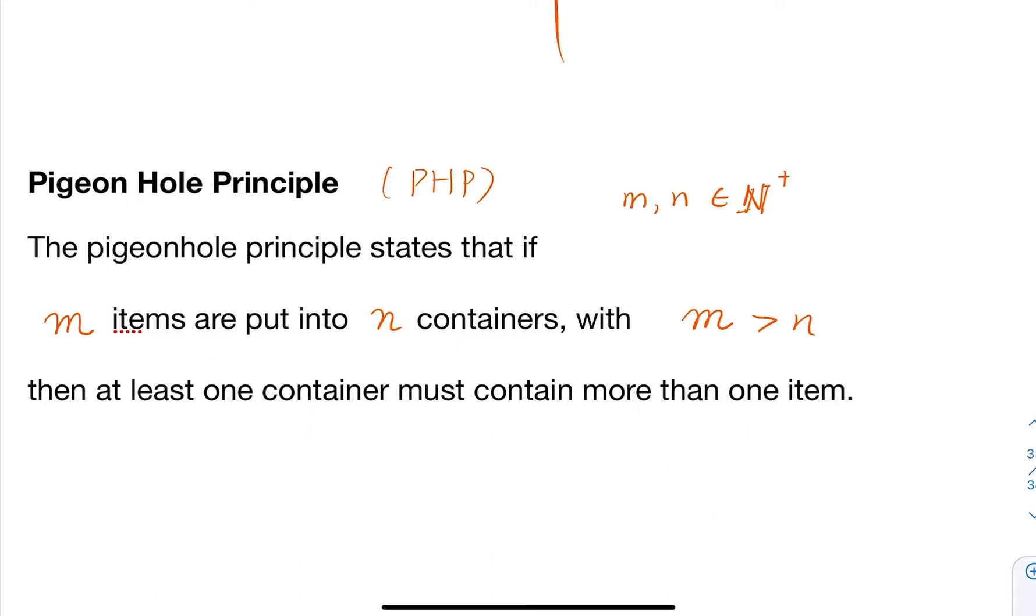There's another form: if m is greater than k times n for some constant k, then there must be more than k items - at least k plus one or more items - in one container. That makes sense, right? Because if you put k elements in each container, at most you can put k times n objects.